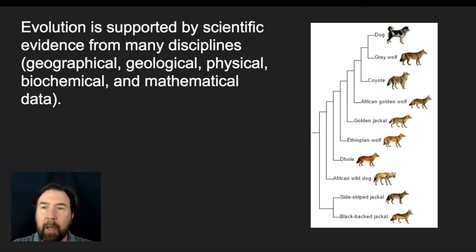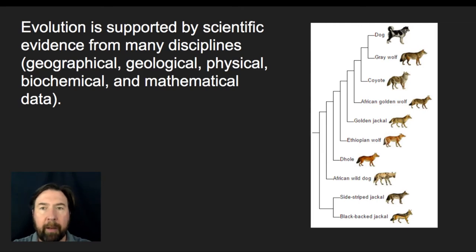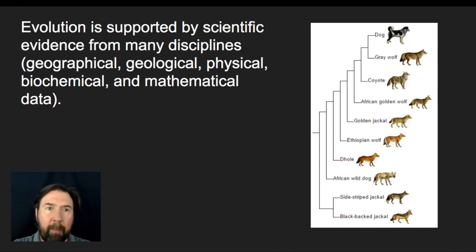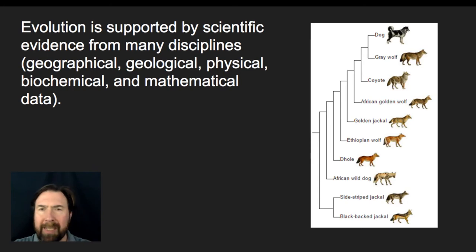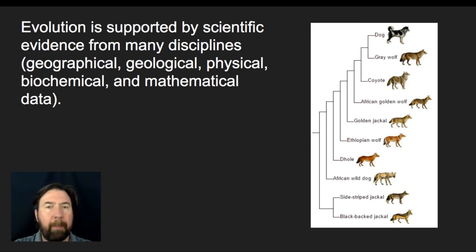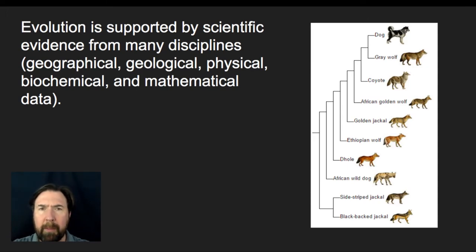The geographical disciplines look at where we find different types of organisms. Geological evidence includes both rock layers and rock structures, but also fossils. Physical evidence involves anatomy. Biochemical evidence includes DNA, RNA, protein sequences, and certain metabolic pathways found in parallel across different types of organisms.